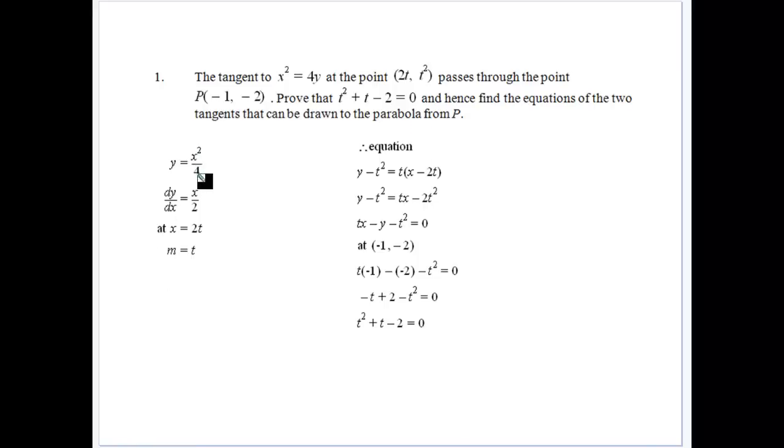So again, like we've done before, we get our first derivative. At x is equal to 2t, we get our equation of the tangent. The value of the gradient being t. So our equation, we put our values in, we've got 2t and t squared, so we sub that in, we've got a gradient of t.